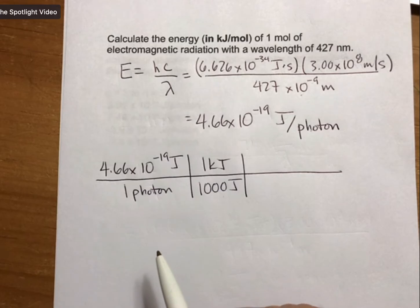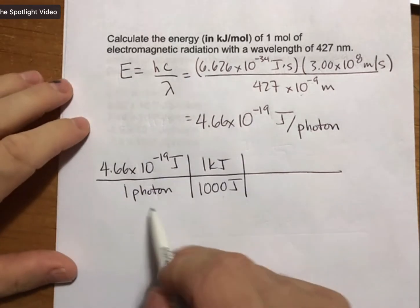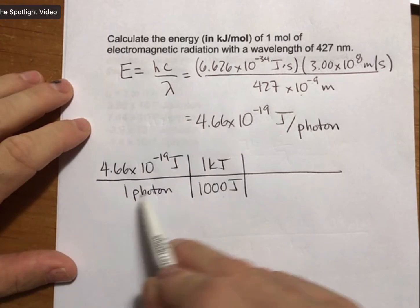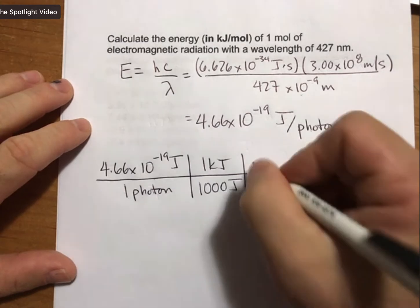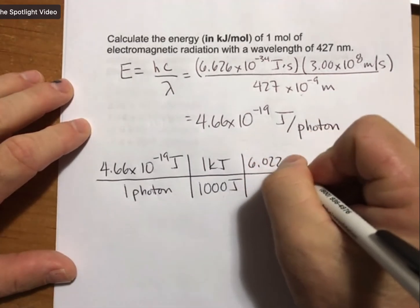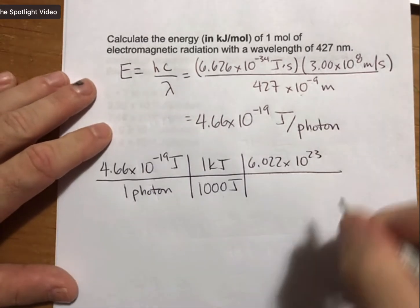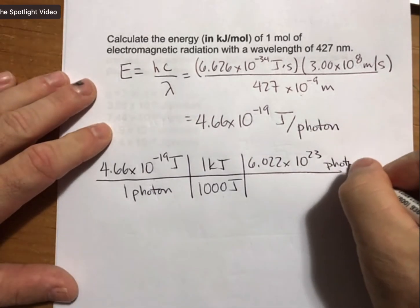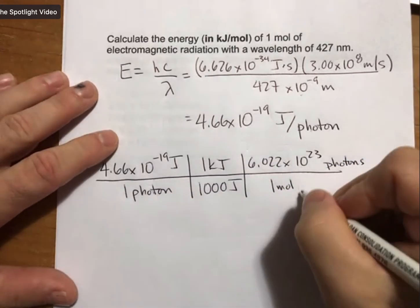It can even be tennis balls, though that's a lot of tennis balls. But now it's going to be photons. So since I have a number of photons down here, I will put Avogadro's number 6.022 times 10 to the 23rd photons is 1 mole of photons.